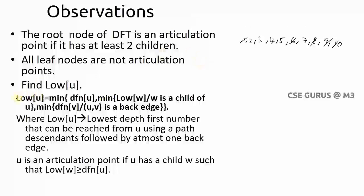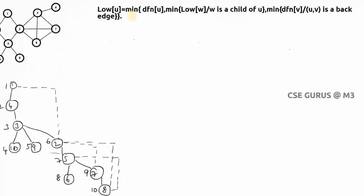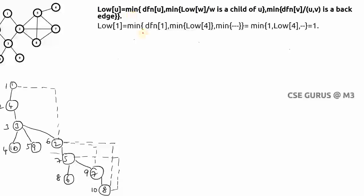The first step is to find the low(u) value for each vertex using the formula. After that, a condition must be satisfied for a vertex to be declared an articulation point. You need to remember this formula and solve according to it. Let's compute low(u) for each node one by one, starting with low(1). Substituting into the formula: the minimum of dfn(1) — which is 1 — and the minimum of low(w) where w is a child of vertex 1. The only child of vertex 1 is vertex 4.